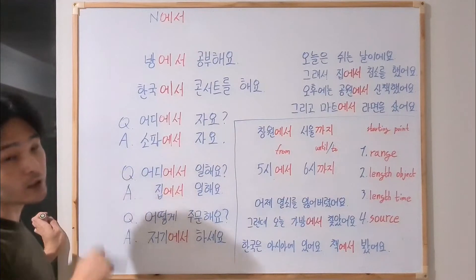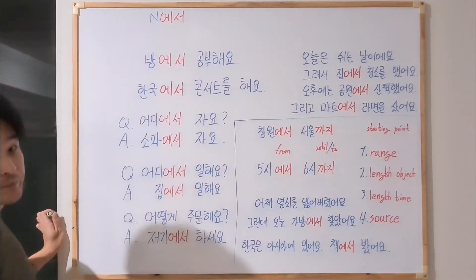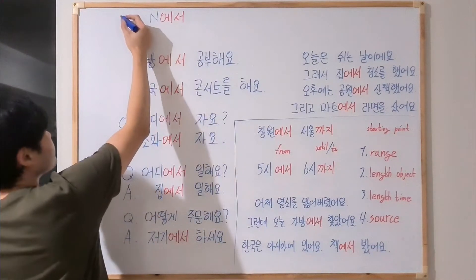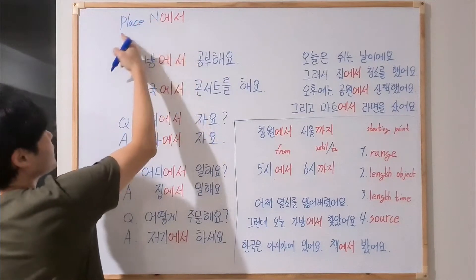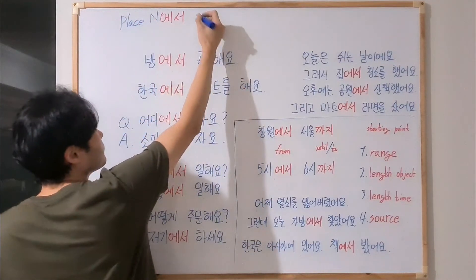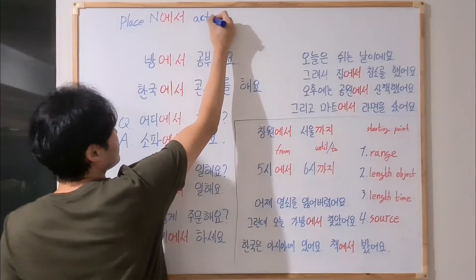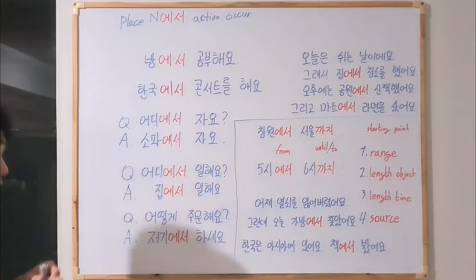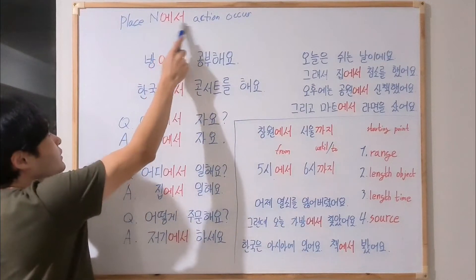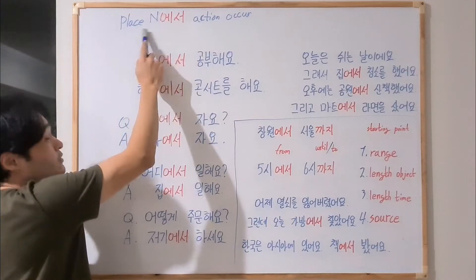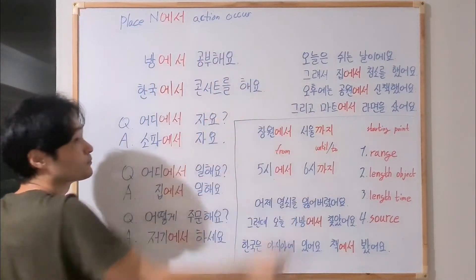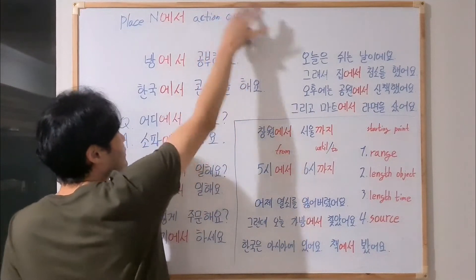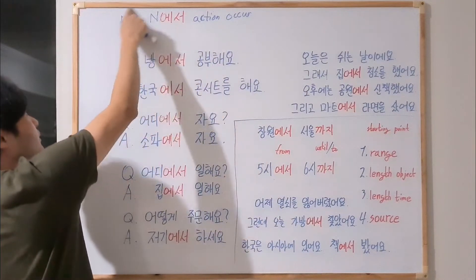Today we're looking at the particle 에서. How did you guys study about this particle? Just place particle 에서 — place noun에서. 에서 indicates that this noun is the place of an action occurred. So it means there is an action occurring here, and 에서 indicates the place.